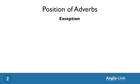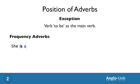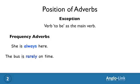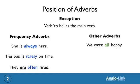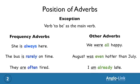Now, there is one exception, and that's the verb 'to be' as the main verb. When it comes to the verb 'to be,' whether it's an auxiliary or the main verb, adverbs always come after it. For example, for frequency adverbs: 'She is always here.' 'The bus is rarely on time.' 'They are often tired.' And with other adverbs: 'We were all happy.' 'August was even hotter than July.' 'I am already late.'